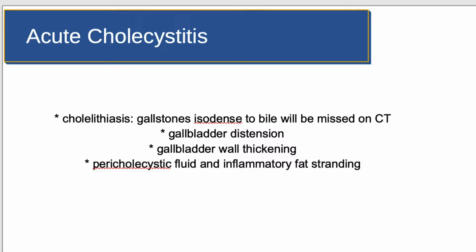Four useful signs to look for on CT for the diagnosis of cholecystitis include: 1. The presence of gallstones, also known as cholelithiasis. It is important to note that gallstones isodense to bile will be missed on CT — in these instances ultrasound is invaluable. 2. Distention of the gallbladder. 3. Gallbladder wall thickening. 4. Pericholecystic fluid and inflammatory fat stranding related to the gallbladder.